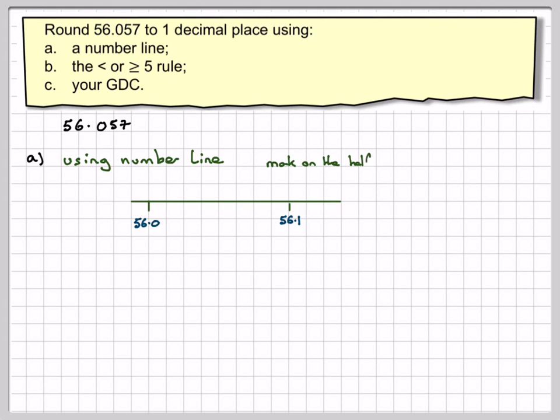The secret is to mark the halfway point, which is 56.05. Then we take our number and decide which side of this line it is - to the left or to the right. We can see that it's slightly to the right of this line. So mark it on there roughly: 56.057. Which number is it nearer to? This one.